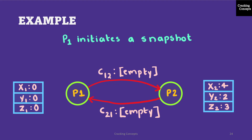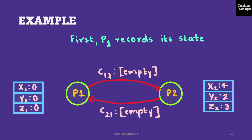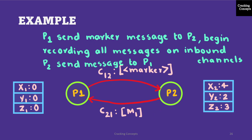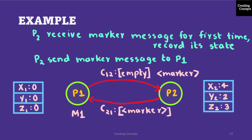Now let us look into an example demonstrating the algorithm. We have two processes P1 and P2 — the same example used before. The channel states are currently empty and P1 is initiating a snapshot. P1 records its own state, then sends a marker message to P2, and begins recording all messages on the inbound channel. Meanwhile, P2 also sends a message to P1. Next, P2 receives the marker message from P1 for the first time.